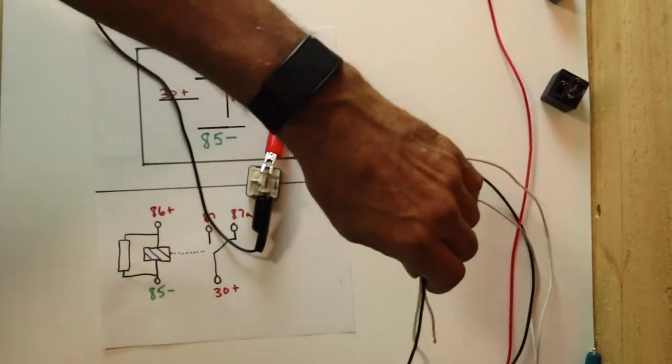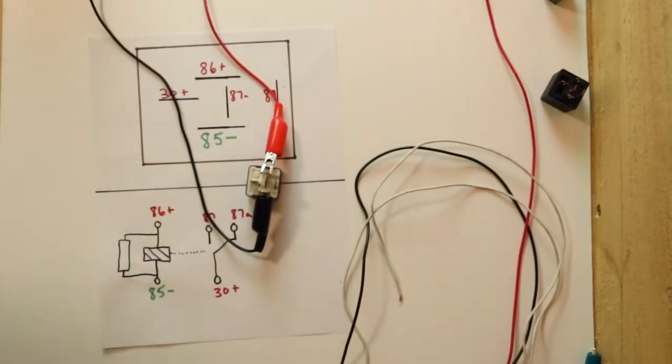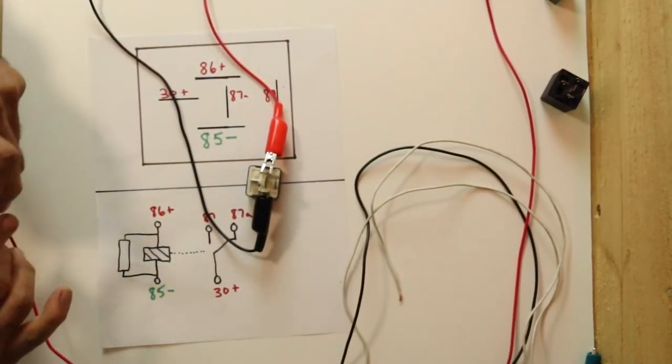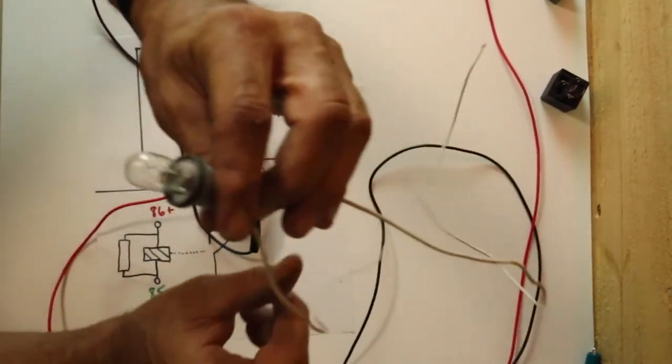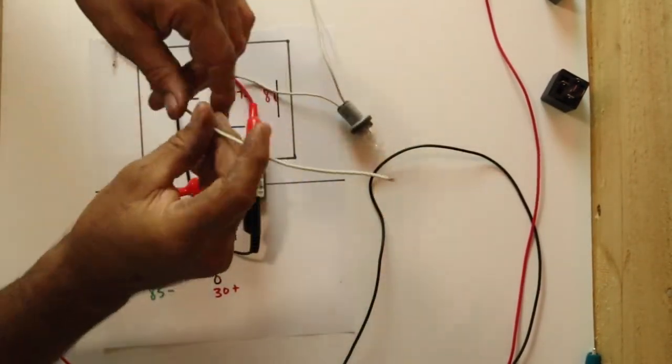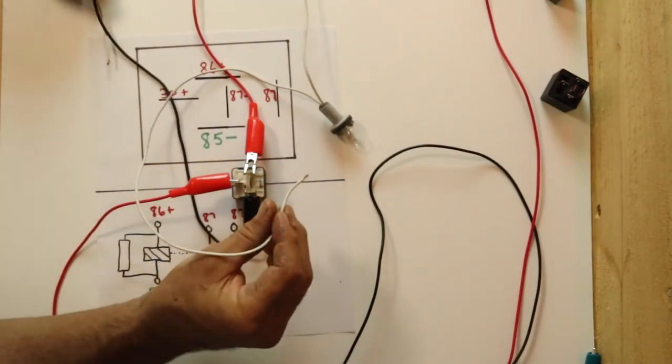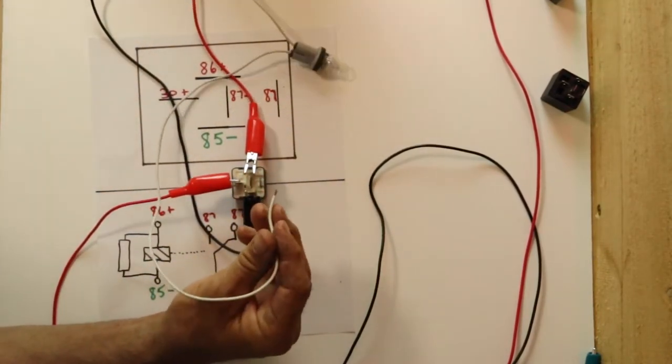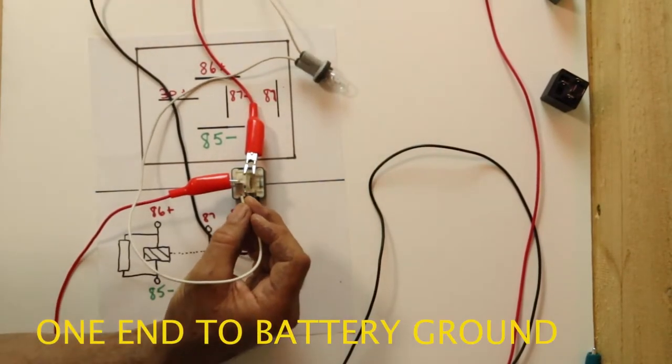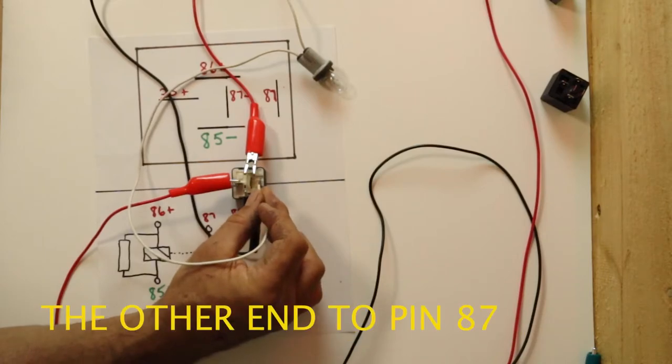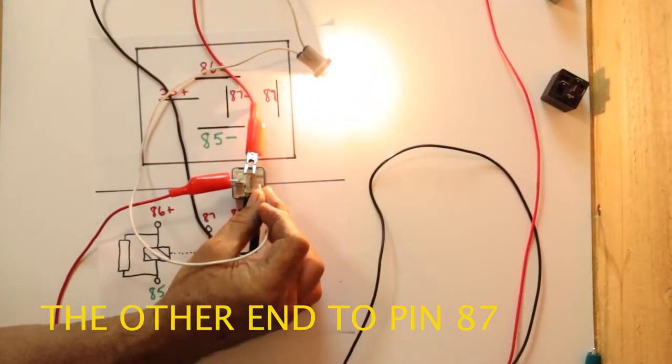The last thing you can do to test it is let's go ahead and put 12 volts on 30, and let's see if it can carry a load. I have my test light. In this case, I'm using a socket from a car. One end to a ground, and touch its end here. You can see it lighten up. So we know that it can carry a load.